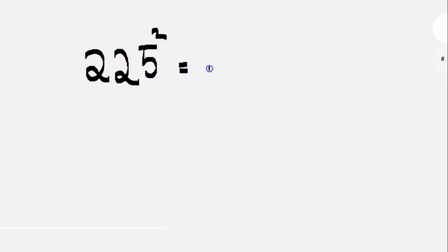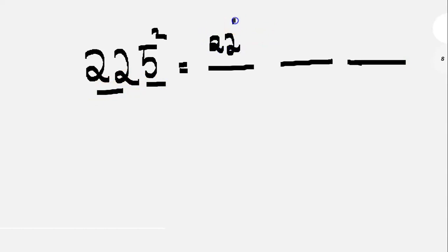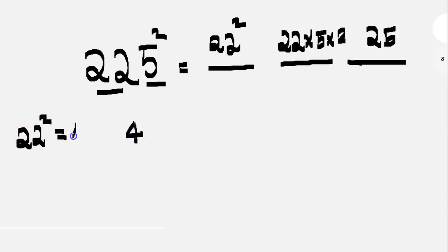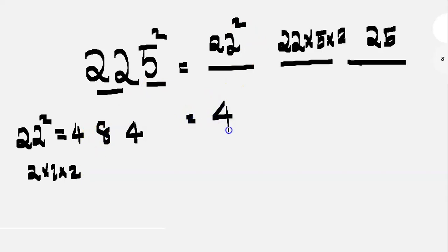225 square. We multiply 22 and 5. In the ones place, 5 squared is 25. We multiply 22 into 5 into 2. Now for 22 square — using the same method: 2 squared is 4, 2 into 2 into 2 gives 8, so 22 square is 484.